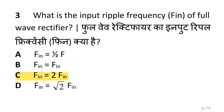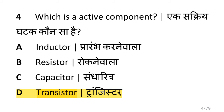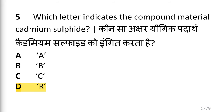What is the input ripple frequency, i.e. F_in, of a full wave rectifier? F_out is equal to twice F_in. Which is an active component? i.e. transistor.